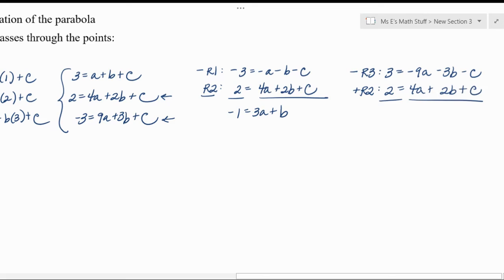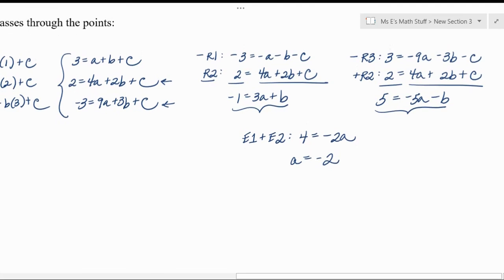Okay, so then I'd have 5 equals negative 5a minus b. There we go, and I set myself up kind of nicely there. So between equation one and equation two, all I'd have to do is add them together to get b to eliminate out. And so if I add those together, I'd end up with 4 equals negative 2a. And then divide both sides by negative 2, and I get a would have been negative 2.